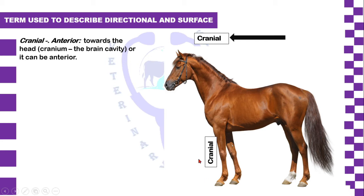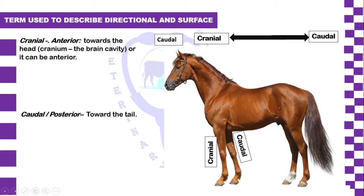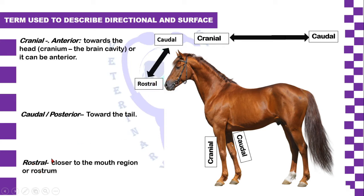Caudal — cauda means the terminal part of the vertebral column, meaning tail. So caudal represents toward the posterior part of the animal or toward the tail. The border, angle, or surface of any anatomical structure which is facing toward the tail is called the caudal surface, caudal border, or caudal angle. The third term is rostral — rosta means beak, nose, or mouth. So rostral represents toward the mouth or nose region.